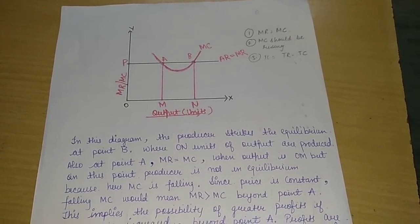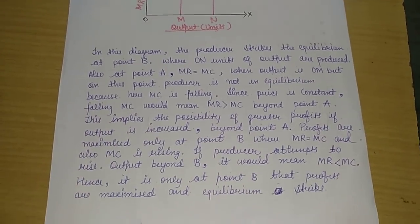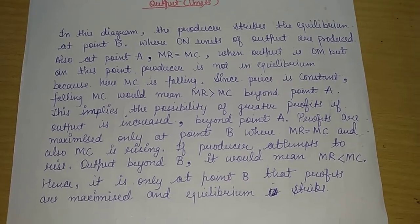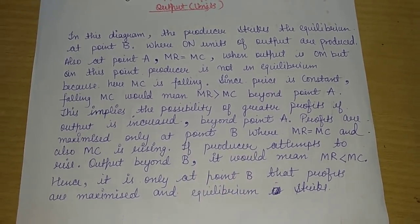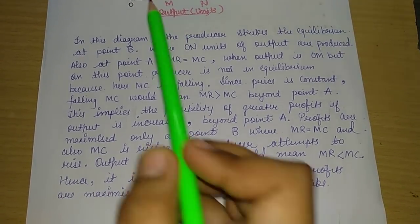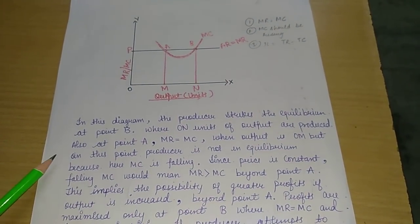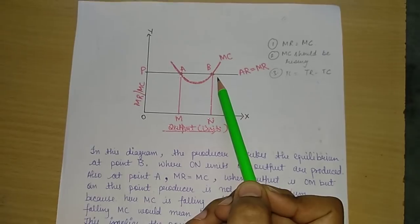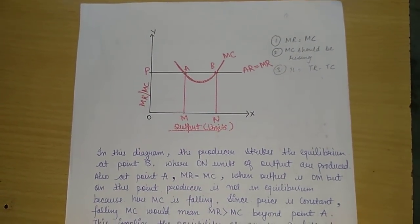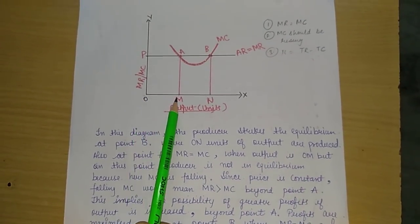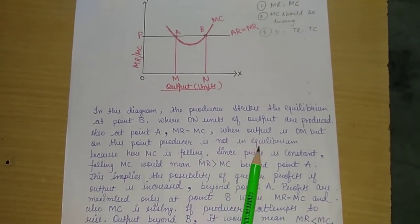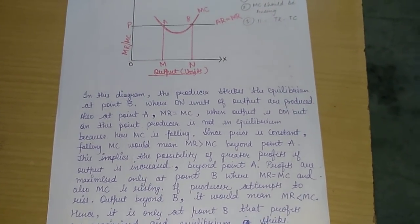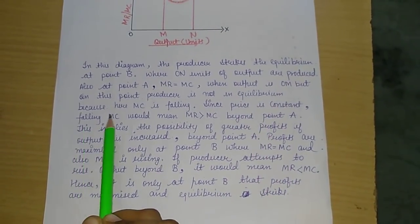Now we will find out whether the equilibrium point is A or B. In the above diagram, the producer strikes equilibrium at Point B, where ON units of output are produced. At Point A, MR and MC are equal, but the producer is not in equilibrium. Why? Because here the second condition — that MC should be rising — is not satisfied. At Point A, MC is falling.